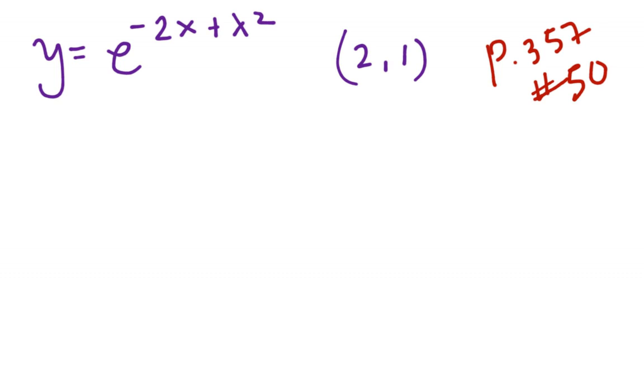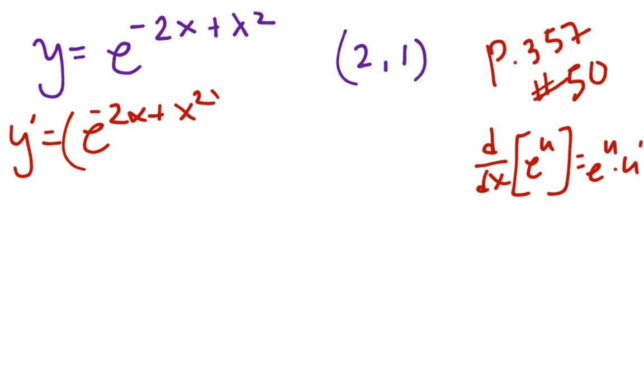I know from my notes that the derivative of e to the u is equal to e to the u times u prime. So, let's apply y prime is equal to e to the u times u prime, which is negative 2 plus 2x.